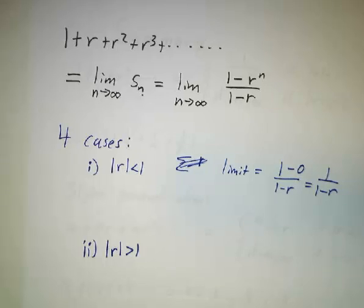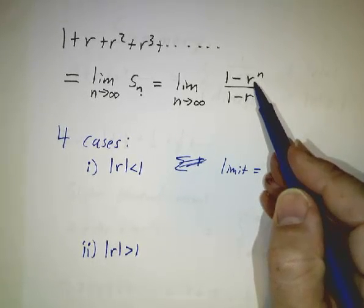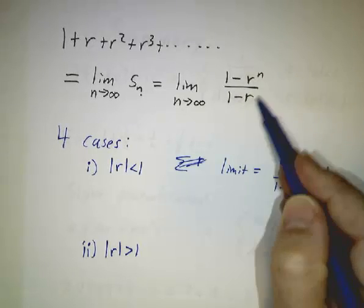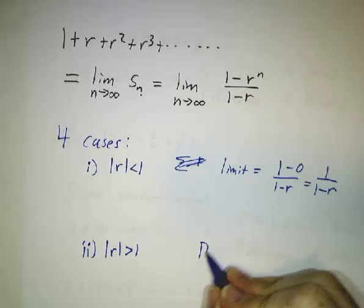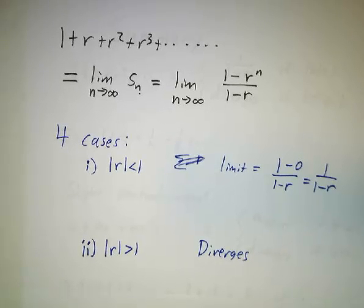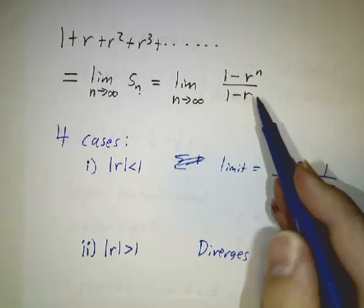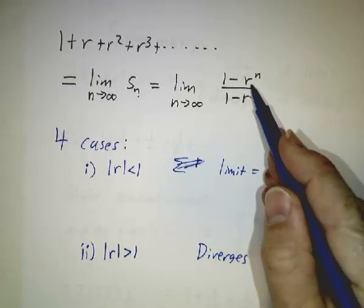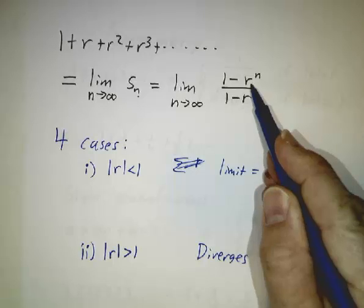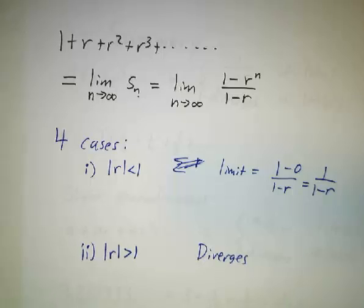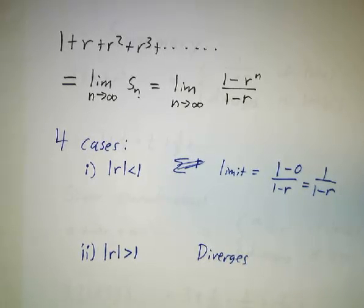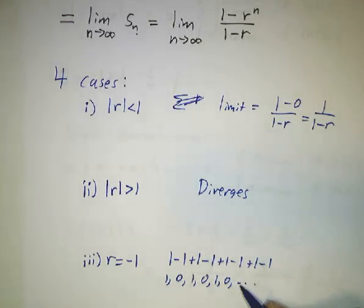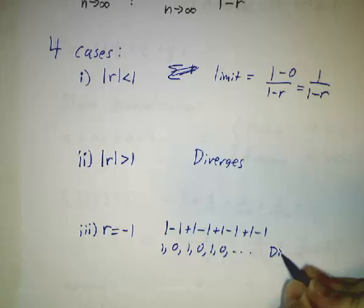If r is bigger than 1, then r to the n gets bigger and bigger and bigger, and this limit doesn't exist — the whole thing diverges. The last two cases are the borderline cases: what if r equals 1 or r equals negative 1? If r equals negative 1, this has no limit because you get negative 1 plus 1, negative 1 plus 1, cycling. The partial sums are 1, 0, 1, 0, 1, 0, and so on. It doesn't get big, but it doesn't approach a limit — so we say it diverges.